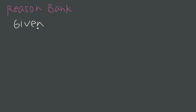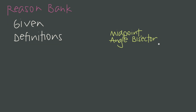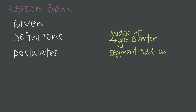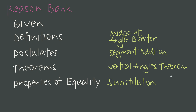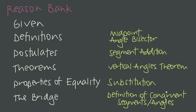Now, for every statement in a two-column proof we must give a reason. There are many kinds of reasons we'll use. The first is that information has been given. We also use definitions — like the definition of a midpoint or angle bisector — postulates like the segment addition postulate, theorems like the vertical angles theorem, and properties of equality like the substitution, addition, or subtraction properties. Finally, we use definitions of congruent segments or angles as the bridge between congruence and equality. As we practice, we'll get more comfortable remembering these reasons.